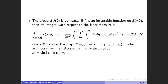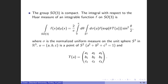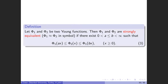The special unitary groups are compact groups. If f is any integrable function on SU(2), its integral with respect to the Haar measure is given by the following equality. The special orthogonal groups are another compact group example. If f is integrable with respect to the Haar measure, the integral of f is given by this equality. For any two Young functions, they are said to be strongly equivalent if there exist positive constants a and b satisfying this inequality. By definition, strongly equivalent Young functions generate the same Orlicz space.